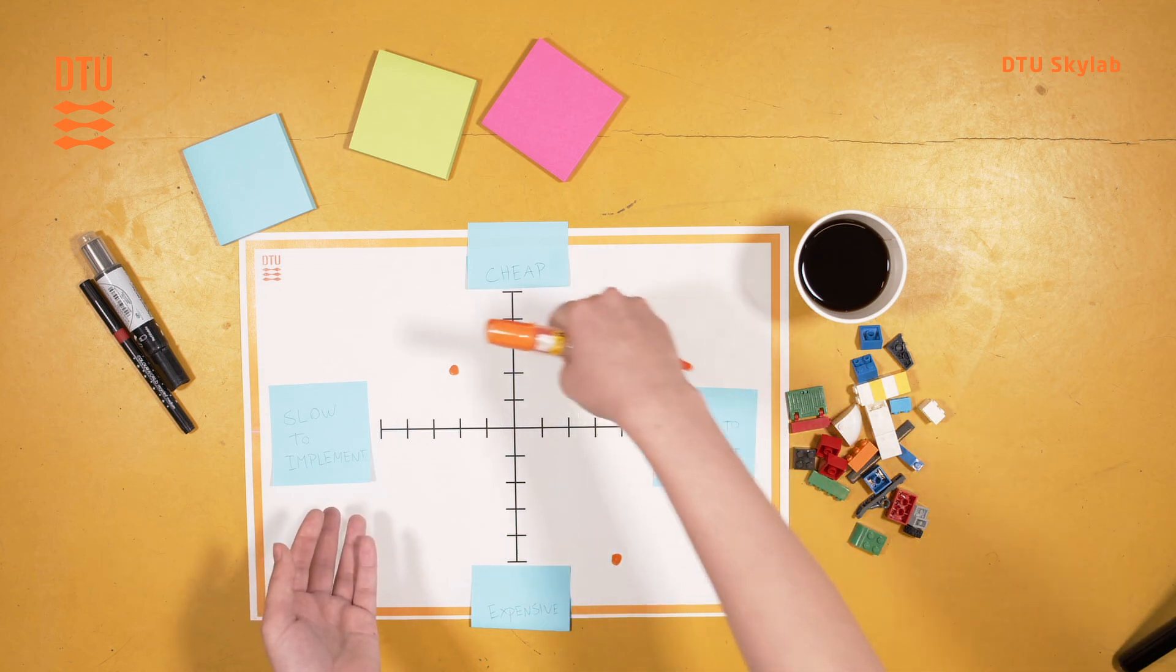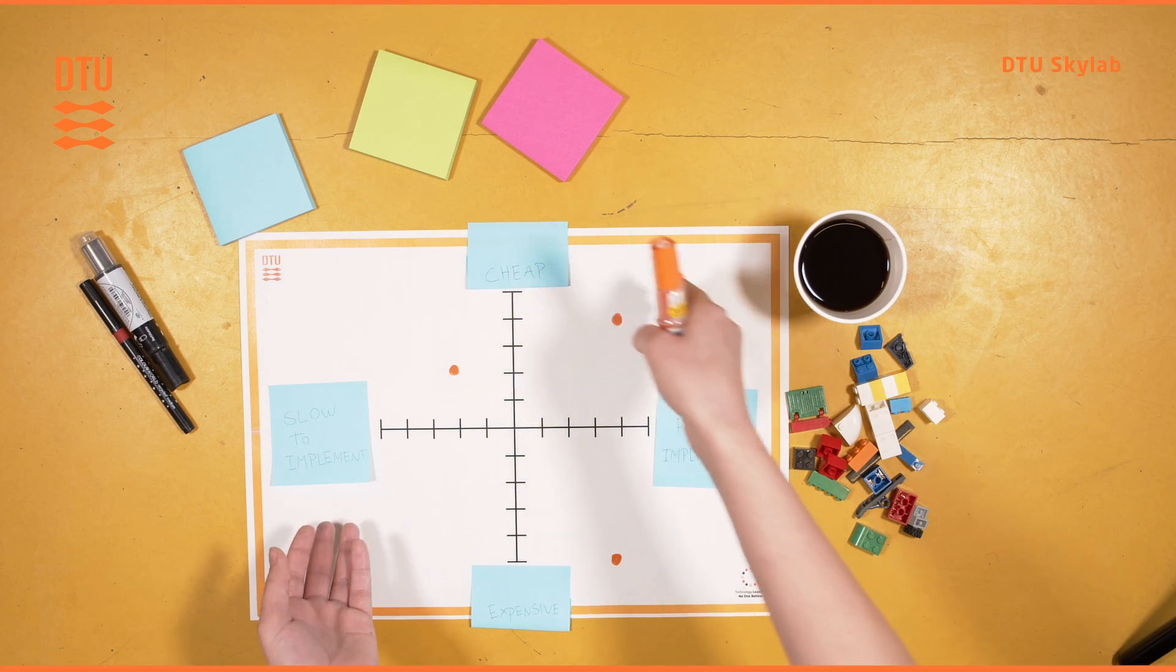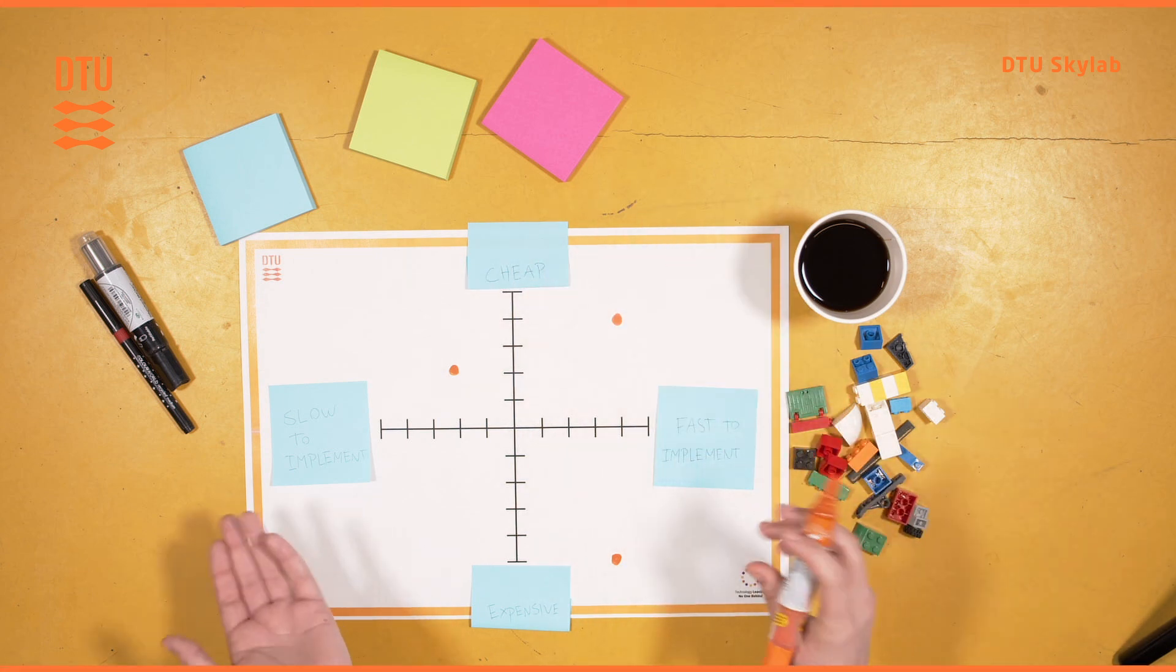So your top concepts would always be aimed to be in the right corner. And that is pretty much how you use the matrix sorting template.